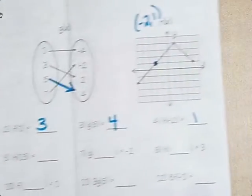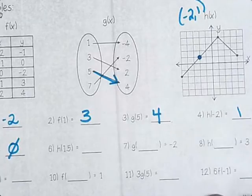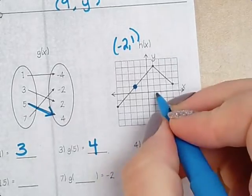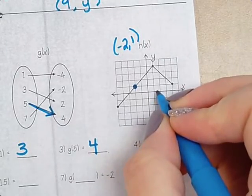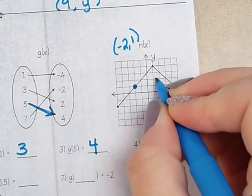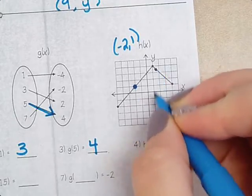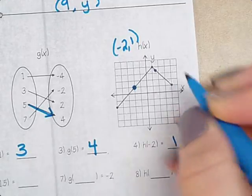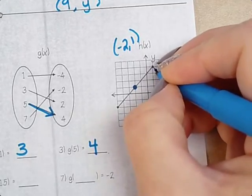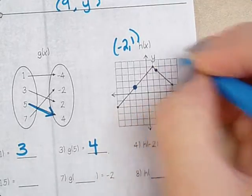h(1.5). So that means that my x value is 1 and a half. So I'm going to go over 1 and a half and go up. Yeah, that looks about 3 and a half because that's 1, 2, 3 and a half. Yeah, I'd say that's 3 and a half.